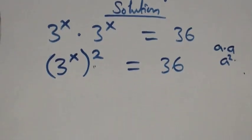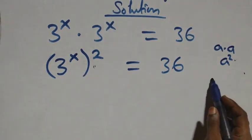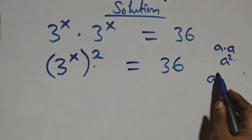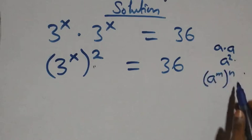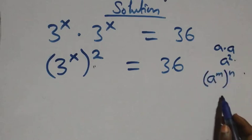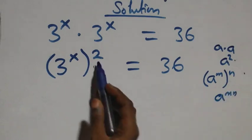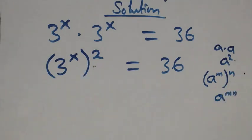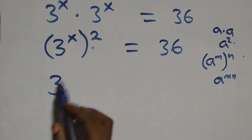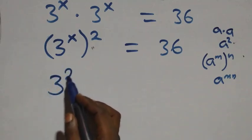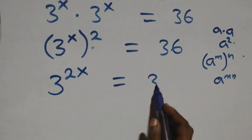That also follows from the rule: when we have a raised to power m, then raised to power n, which is the same thing as a raised to power m times n. So what we have becomes 3 raised to power 2x equals to 36.